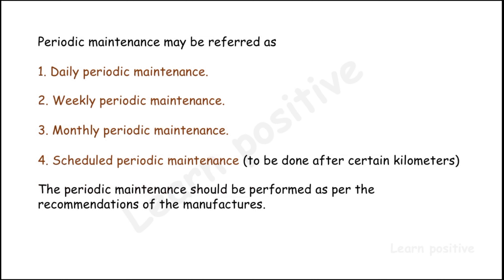Daily maintenance includes vehicle cleaning, battery checking, and tire pressure checking. Weekly maintenance covers checking radiators and tires. Monthly maintenance involves servicing the overall vehicle with lubrication and related tasks. Scheduled maintenance involves overall vehicle service work. These are the introductions to daily, weekly, monthly, and scheduled periodic maintenance.